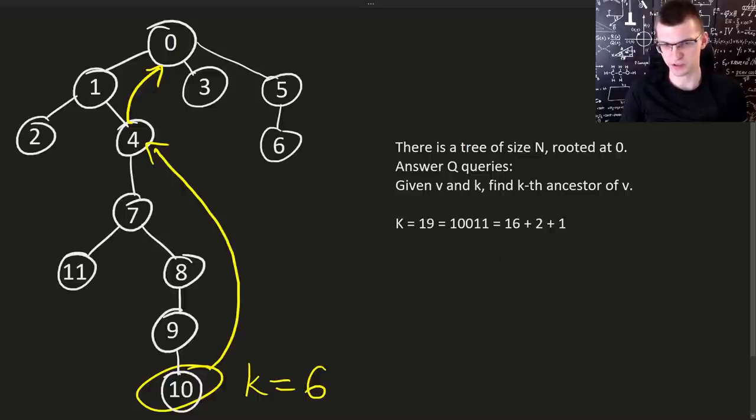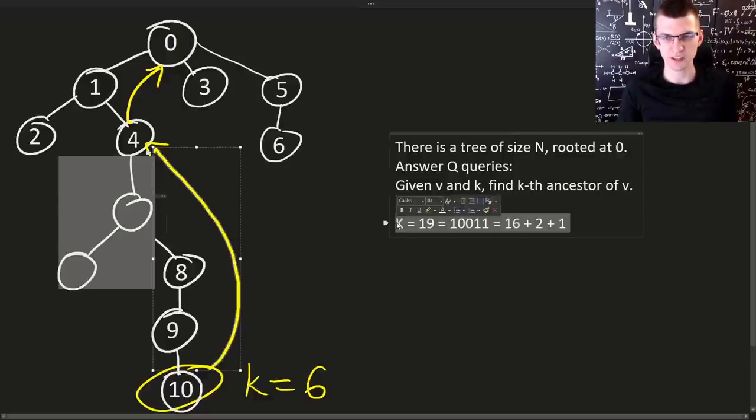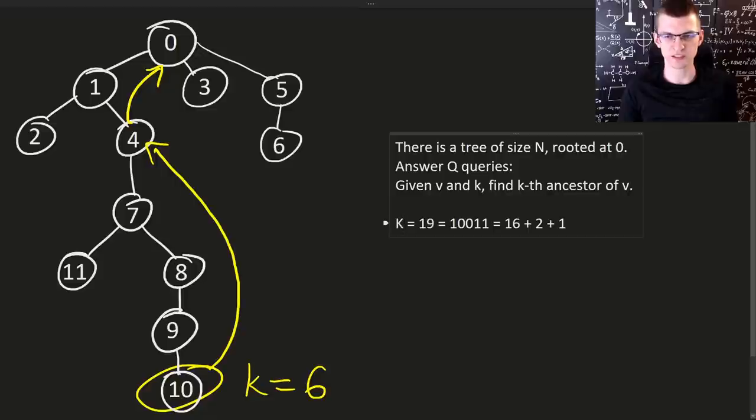Any k can be represented as the sum of powers of 2 because say k is equal 19. It is something in binary system like 16 plus 8. I think it's this in binary system so it is equal to 16 plus 2 plus 1. If you need to go up by 19 steps but you can go up by one step, 2, 4, 8, 16 you can just make 3 such big jumps. Binary lifting is also called sometimes jump pointers because we make those jumps.